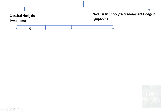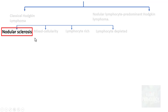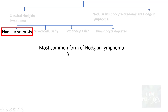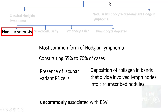Coming back to the classification — classical Hodgkin lymphoma is categorized into nodular sclerosis, mixed cellularity, lymphocyte-rich, and lymphocyte-depleted. Nodular sclerosis is the most common form, accounting for around 65 to 70% of cases. The characteristic histological feature is the presence of lacunar variant Reed-Sternberg cells, along with bands of collagen that divide the lymph node into various circumscribed nodules. It is uncommonly associated with Epstein-Barr virus infection.